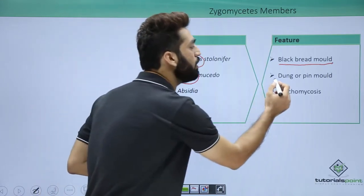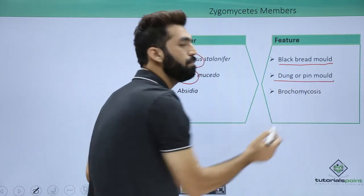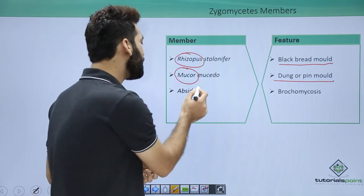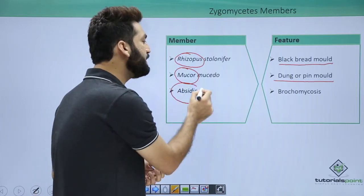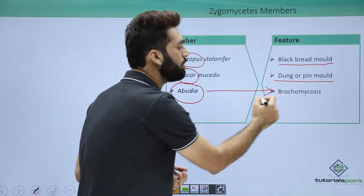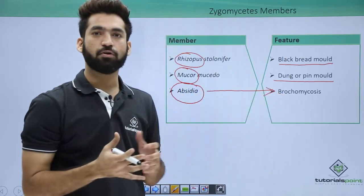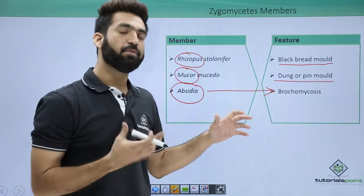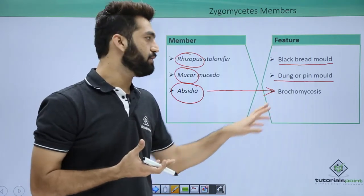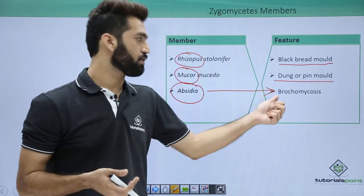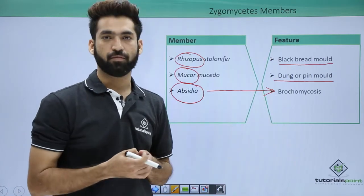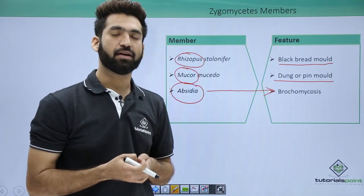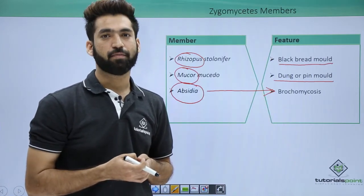Mucor is called dung or pin mold and is basically found on dung. Another important member is Absidia, which causes bronchomycosis — 'broncho' refers to your lungs, so the fungus attacks the bronchi of the lungs causing bronchomycosis. In the next session I will be talking about ascomycetes.